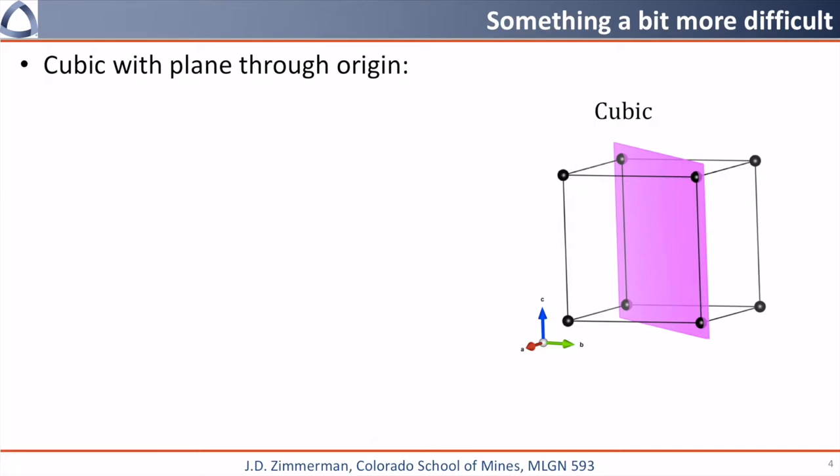I'm going to do something a little bit more difficult now. We're going to assume the origin is this back bottom atom right here. So we're going to have a cubic cell, and we're going to have a plane through the origin. If we were to go through the math we did on the last page, we would get infinity, infinity, and then I don't know what to do with the last one because it crosses at all values in the c axis. So this isn't going to work.